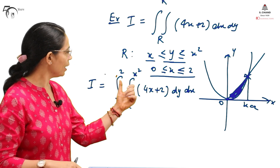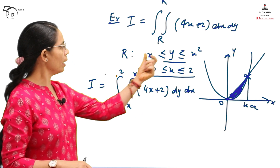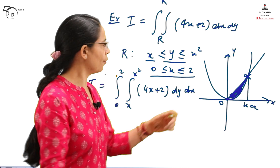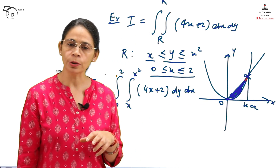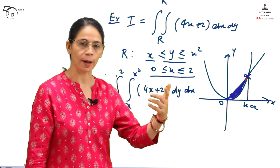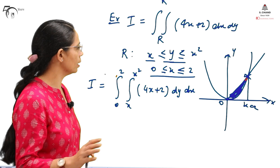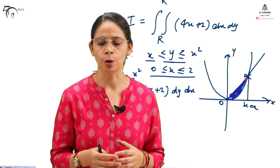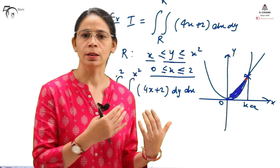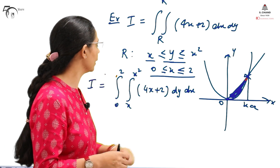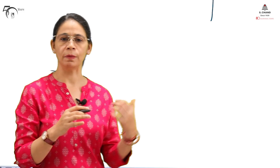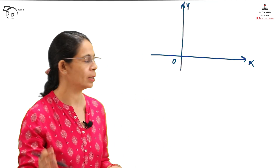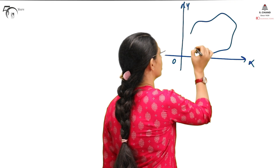That is why we need to rewrite the same region of integration where the limit of x will be written in terms of y and the limit of y will be treated as a constant. From this region of integration, we need to find out how to write the limit of x in terms of y. For that, I have a method called the strip method, which is very useful in calculating limits for such regions of integration. This method is not explained in many books, so please look at it carefully.